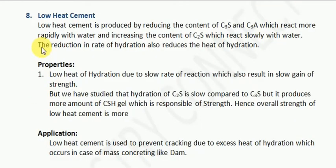Now let us understand about low heat cement. Before starting, I would like to remind you about the chemical reaction that takes place when water is added to cement. When we add water to cement, first C3A — that is, calcium aluminate — reacts. The calcium aluminate reaction is so fast that within a few seconds it starts to set. This is why we add gypsum in cement.